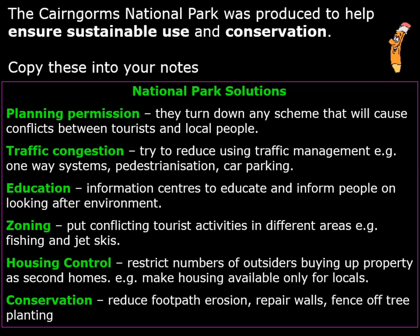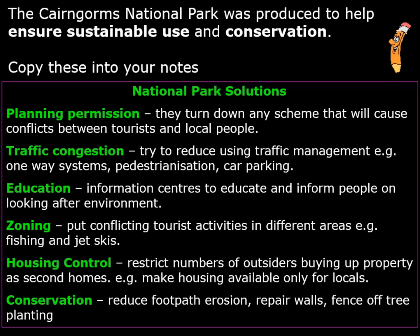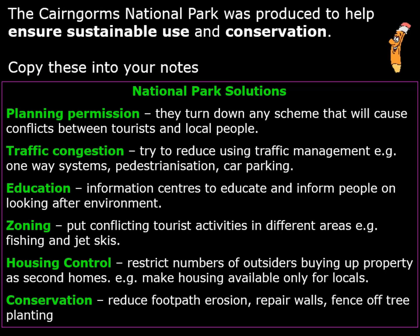Housing control restricts numbers of outsiders buying up property such as second homes, making housing available only for locals or people who are going to live there permanently. Second housing is a real danger — if someone only lives there two or three months of the year, they are not using local services such as shops, restaurants, doctor surgeries or pharmacies. These resources will then close down due to lack of business, making it very difficult for locals to use them. Finally, conservation reduces footpath erosion, repairs walls, fences off tree planting areas, and is one of the most important jobs a National Park will do.